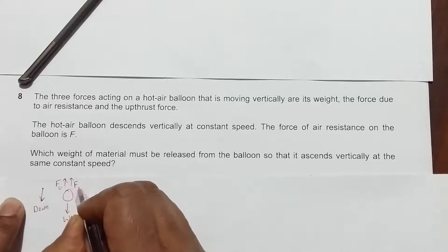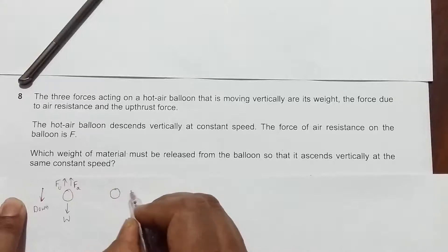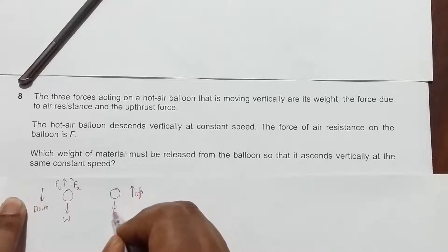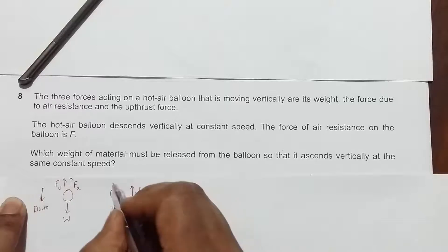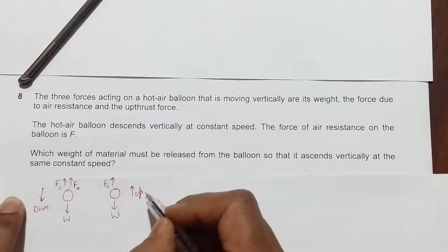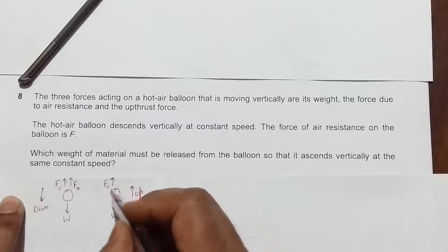But if the body is going up, the forces will be weight and the thrust force, and the air resistance will be acting opposite to the motion, so the air resistance will be acting downward, F_air resistance.